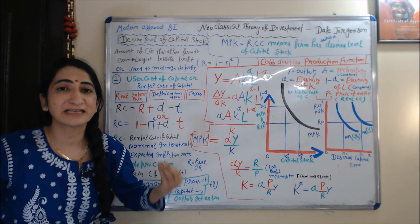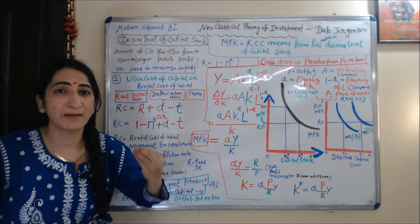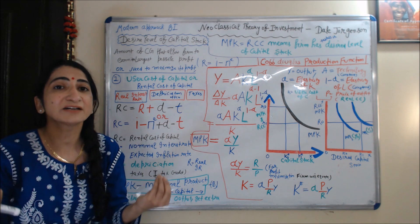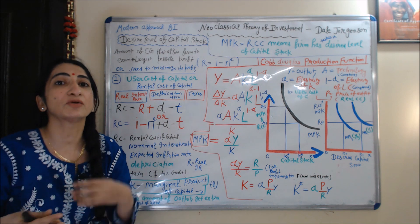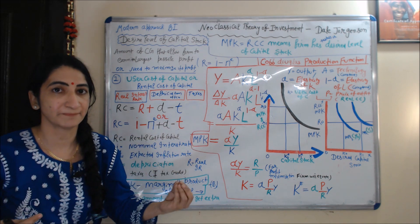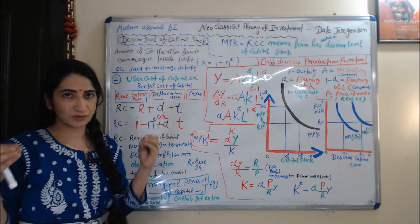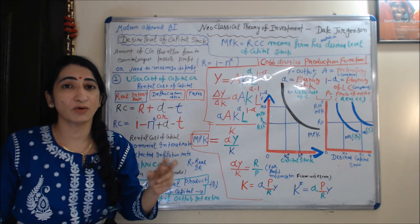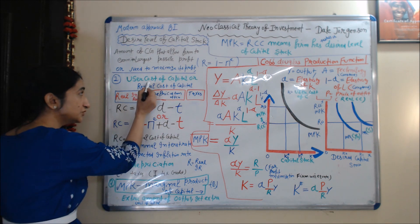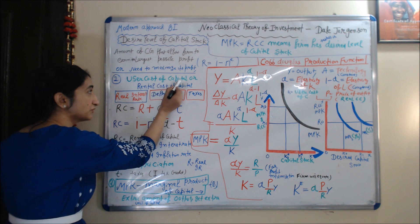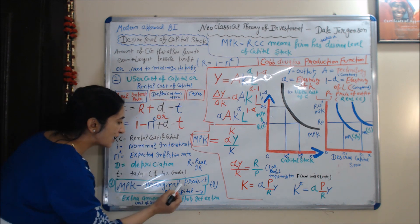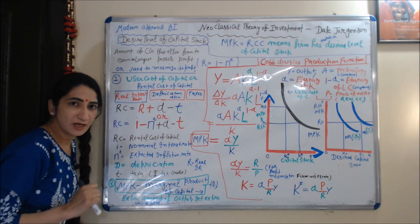Or we can say that the desired level of capital stock is the amount of capital goods that the firm needs to maximize its profit. The desired level of capital stock depends on two factors: first is the user cost of capital, and second is the marginal product of capital.